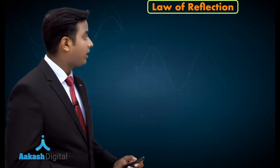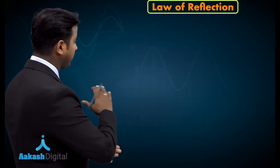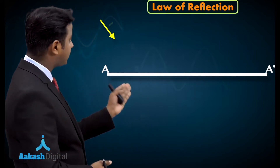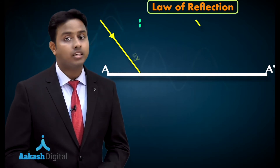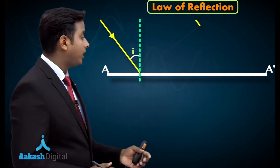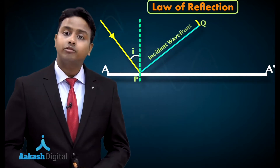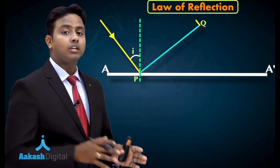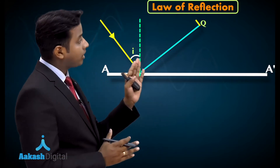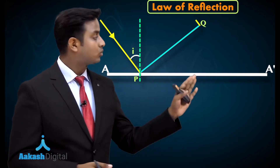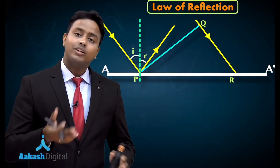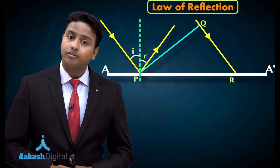I have taken an interface A-A dash which is a reflecting surface. On this reflecting surface I have an incident beam making a certain angle i with the line of normal. Since a wavefront is perpendicular to the incident beam, PQ is the incident wavefront. The part at point P has already struck the mirror, and the part at Q still has to travel a certain distance to reach point R, the point of striking.